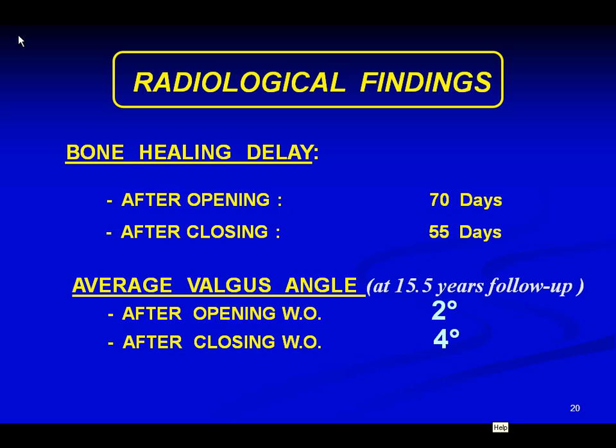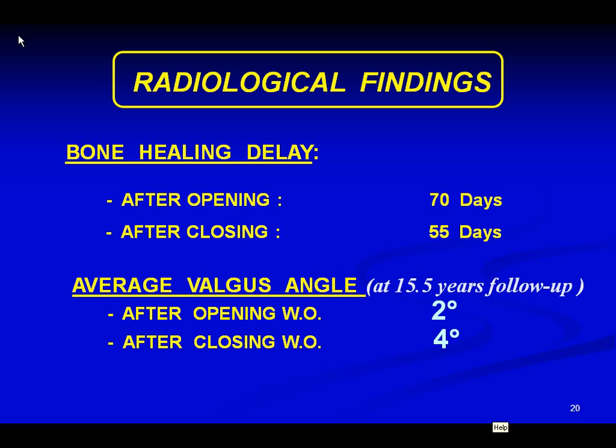The obtained average valgus angle after opening osteotomy at 15 years is 2 degrees remaining, and after closing only 4 degrees remaining. Our global long-term results show 42% good and very good results after 15 years.